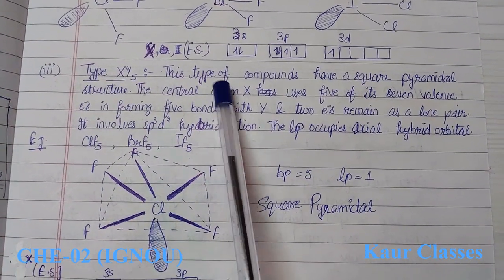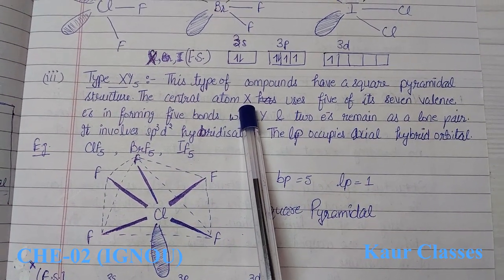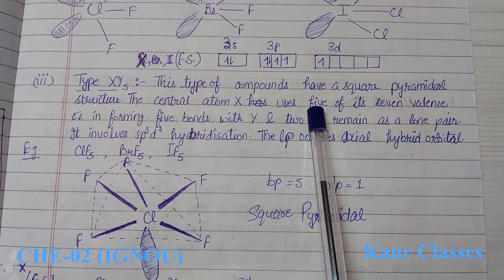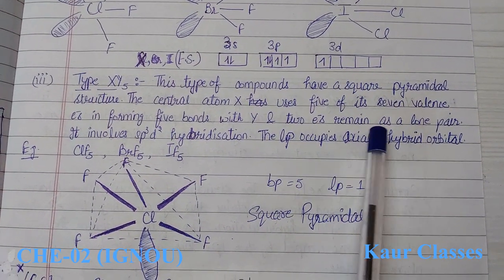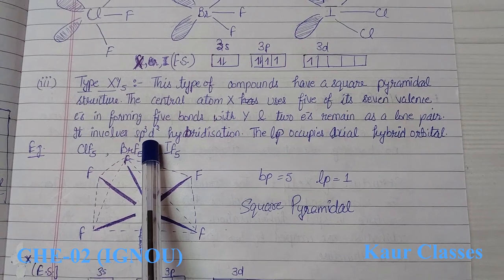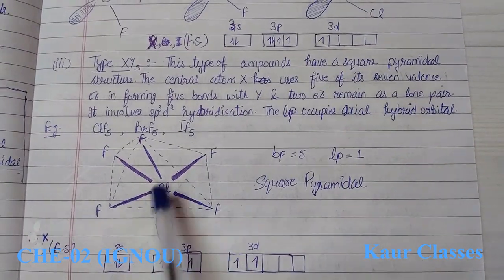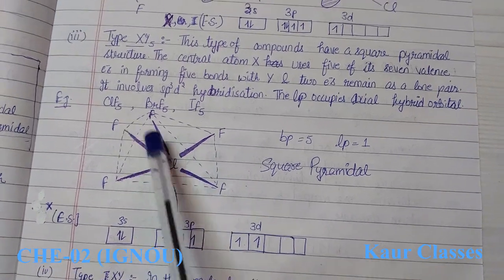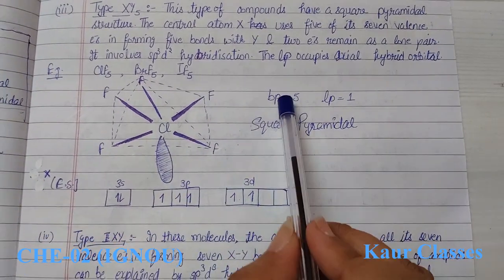The third type is XY5. These compounds have a square pyramidal structure. The central X atom uses five of its orbitals to form five bond pairs and has one lone pair, giving sp3d2 hybridization. The lone pair occupies an axial hybrid orbital. For example, chlorine pentafluoride (ClF5) has five bond pairs with fluorine atoms and one lone pair — total six electron pairs.